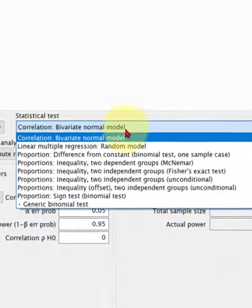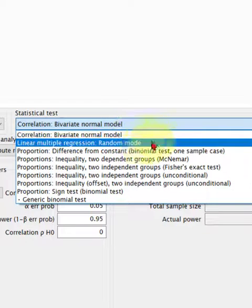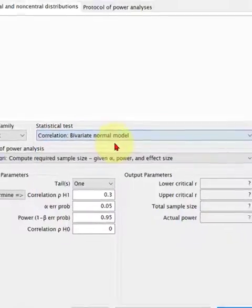So let's just see what else they got. They got, that's us, and the rest of these are, they have proportion tests that we don't use much anymore, and a linear multiple regression random model, just that one right there.